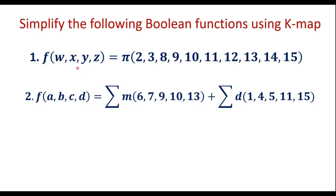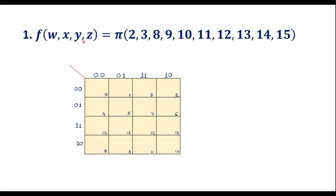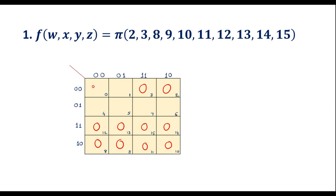Let me consider the first function: f(w,x,y,z) = π (product of max terms). In max terms, we give zeros in the corresponding cell numbers. So cell numbers 2, 3, 8, 9, 10, 11, 12, 13, 14, and 15 are zero. We enter ones in the remaining cells.